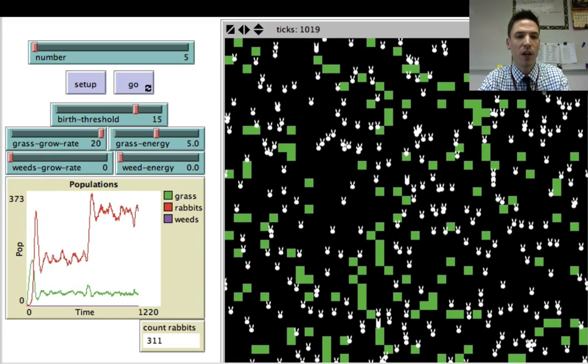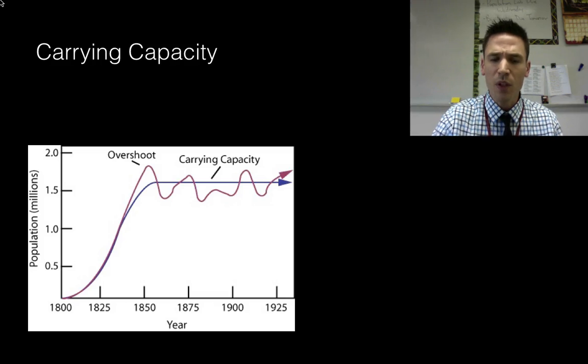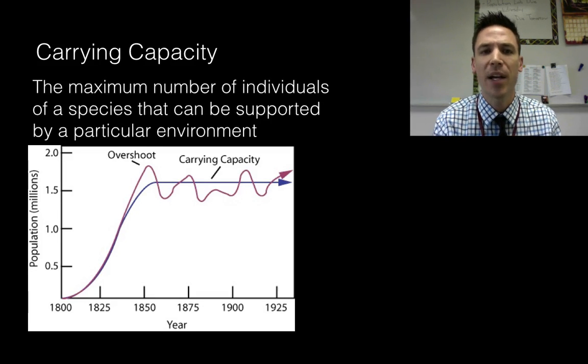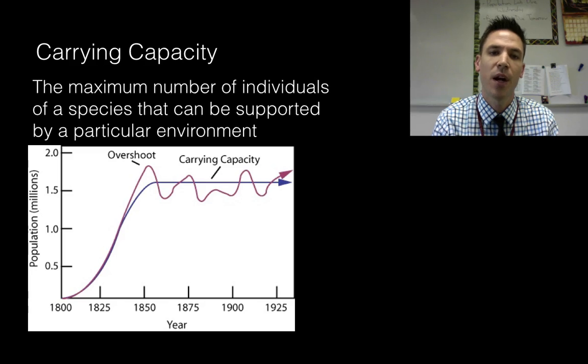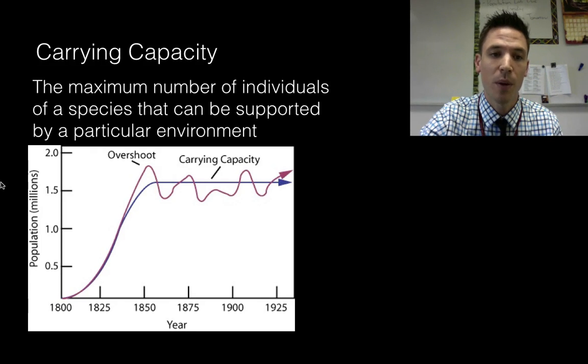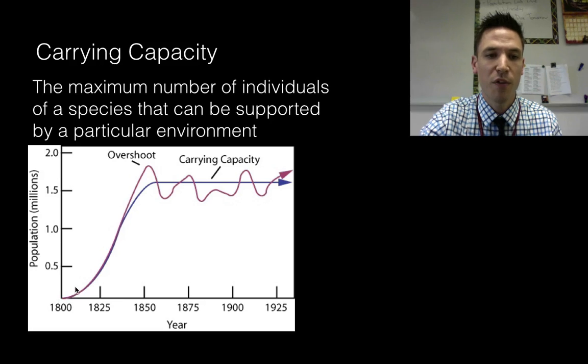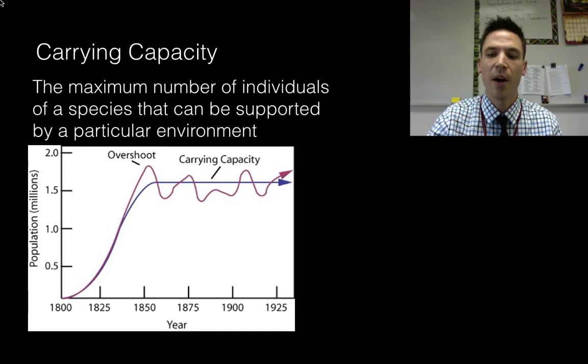Well what do we call this leveling off point? The term in biology is the carrying capacity. All the carrying capacity is is the maximum number of individuals of a species that can be supported by a particular environment. In this case the rabbits were limited by the amount of food that were available. Either way, when we take a look at graphs of populations, when the population eventually levels off and stops increasing and decreasing we've reached what's called the carrying capacity.